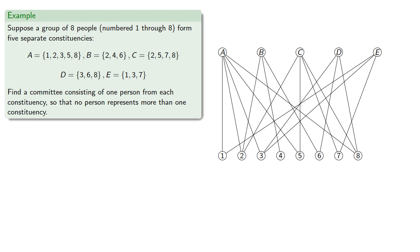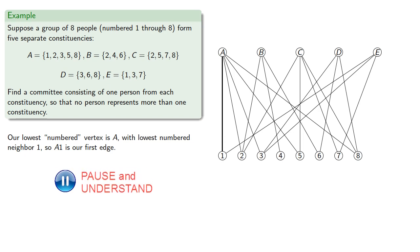So, we'll take our lowest-numbered vertex, A, and we'll join it to its lowest-numbered neighbor, that's 1, so A1 is our first edge. Next, B has lowest-numbered neighbor, 2, so B2 is our second edge.